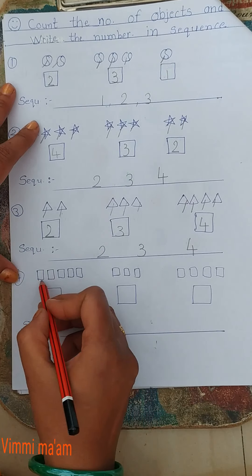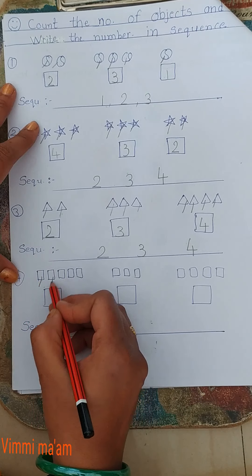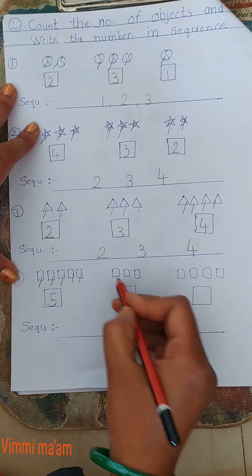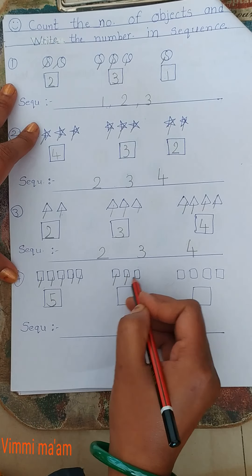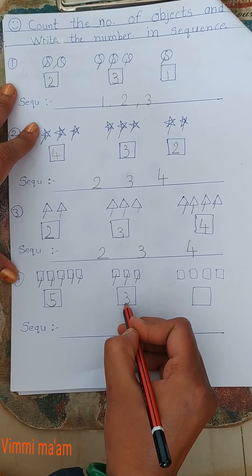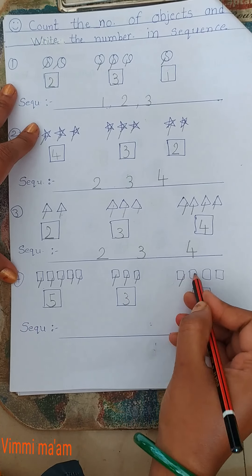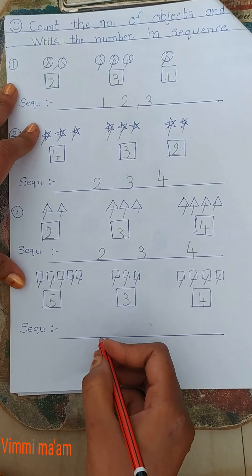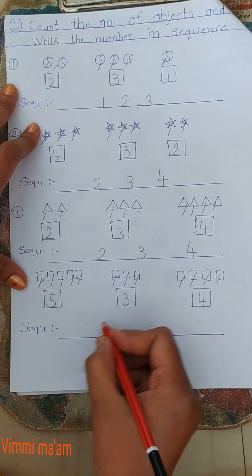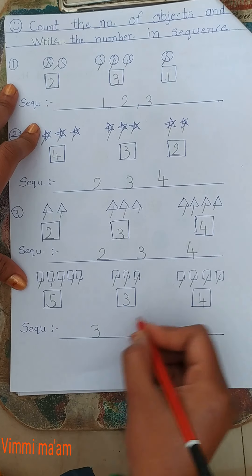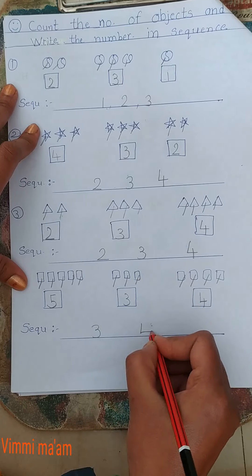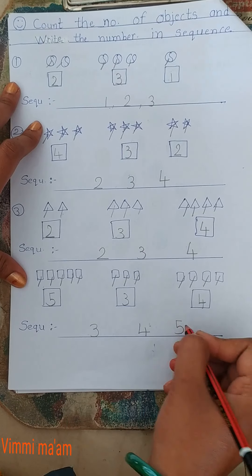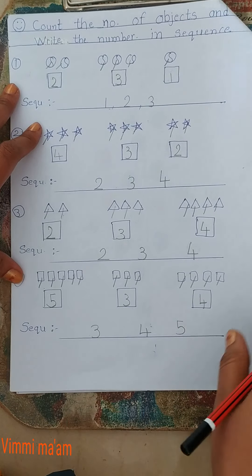Now next: one, two, three, four, five — number five. One, two, three — number three. One, two, three, four — number four. Now sequence: three, one, two, three, four, five. Pahle aayega number three, phir aayega four, phir aayega five. Okay?